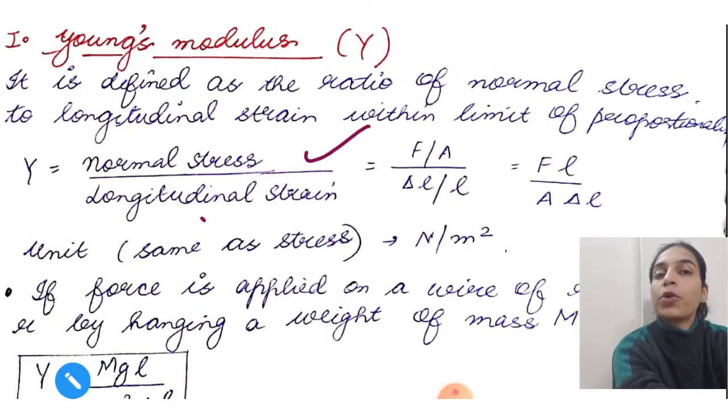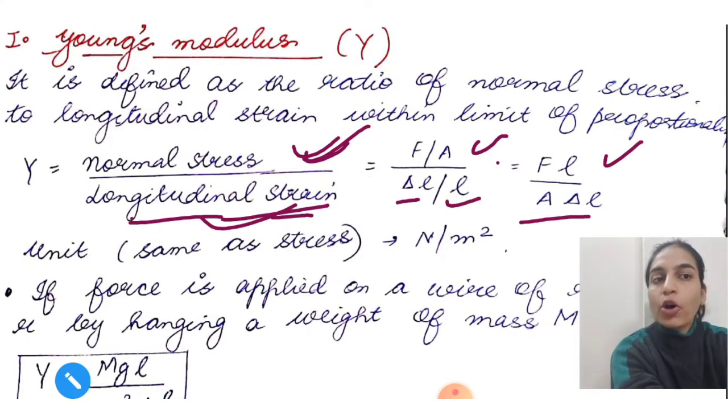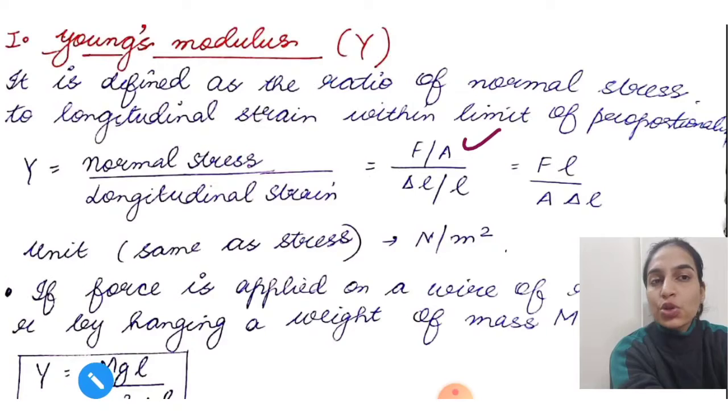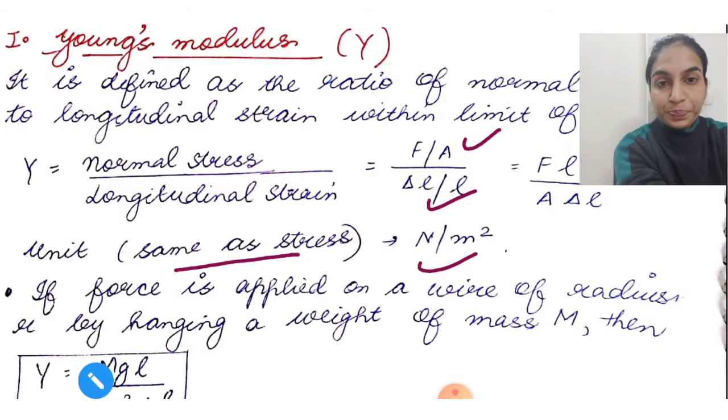Obviously when we derive this constant, it will be valid up to this point, so we must mention within the limit of proportionality. Young's modulus equals normal stress upon longitudinal strain. Stress formula is force upon area. Longitudinal strain means there will be change in length, so F by A divided by delta L upon L. When rearranged, this becomes F L upon A delta L. Its unit will be the same as stress since strain is unitless, so the unit is newton per meter square.